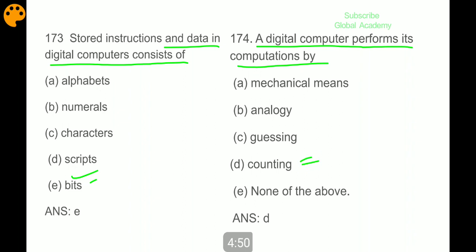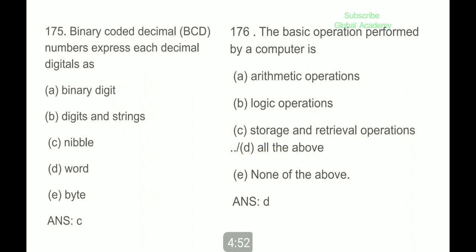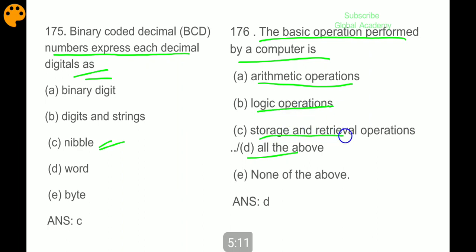A digital computer performs its computations by counting. Binary coded decimals express each decimal digit as a nibble. The basic operations performed by a computer are all the above: arithmetic operations, logic operations, storage and retrieval operations.